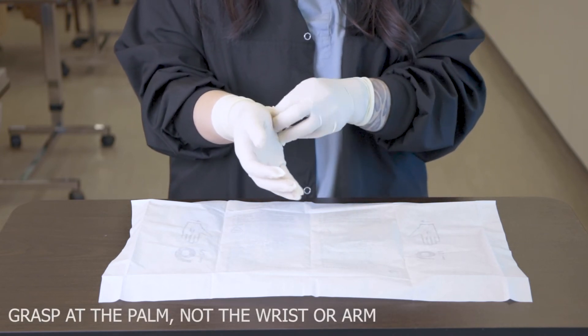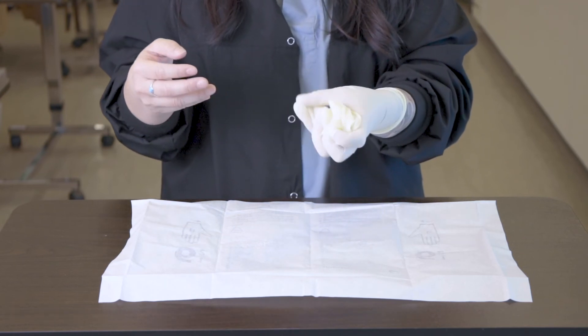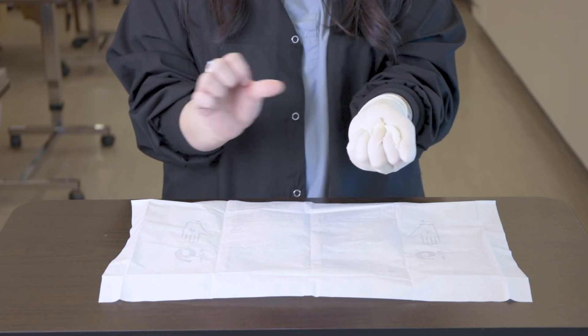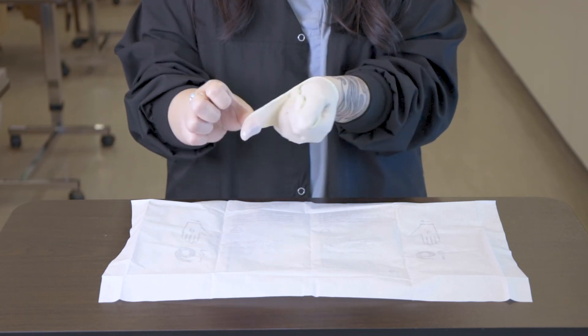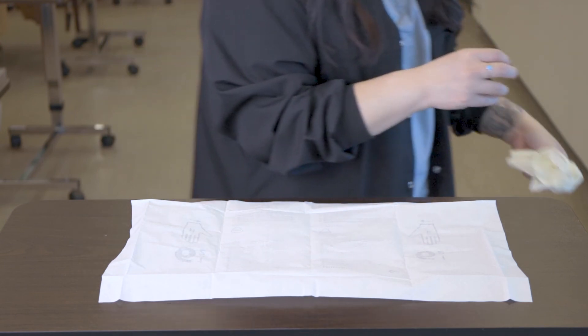To dispose of your gloves, make sure that you're grasping at the palm of your hand and not at the wrist. Crumple up the glove, then remove the other glove by using your thumb and scooping it up at the inner cuff.